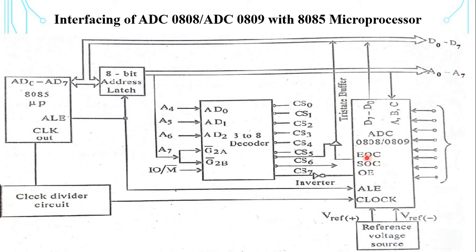The processor can check for a valid EOC before reading the output buffer of the ADC. This completes the interfacing operation of ADC 0808 or 0809 with the 8085 microprocessor.